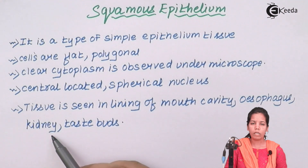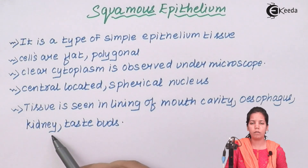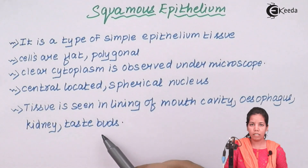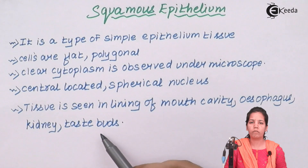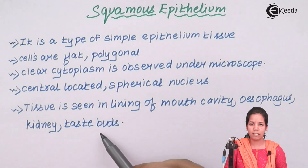Your kidney, as an organ, basically does ultra-filtration with its smallest functional units called nephrons. Finally, your taste receptors or taste buds — which help you differentiate between different tastes such as sour and sweet — are also covered by squamous epithelium cells.